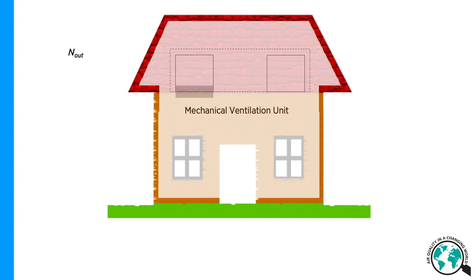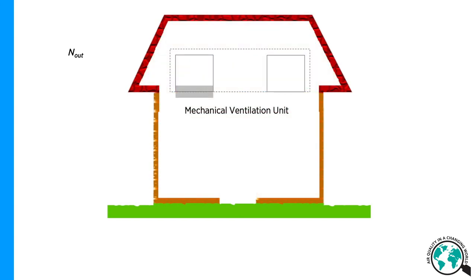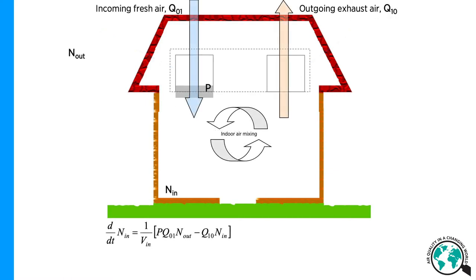This house could be equipped with mechanical ventilation, which could have a filter with a penetration factor P. There is incoming outdoor air, indicated by Q01, and the outgoing air is indicated by Q10.